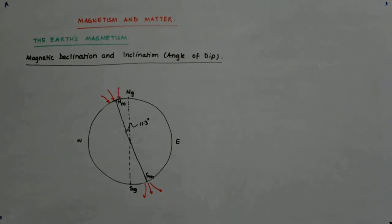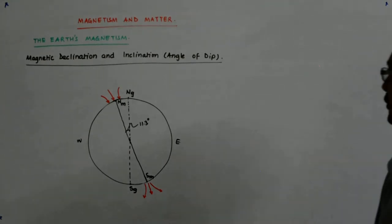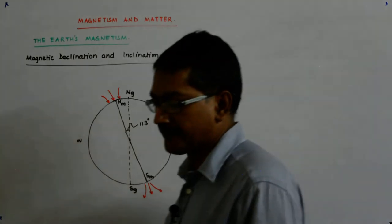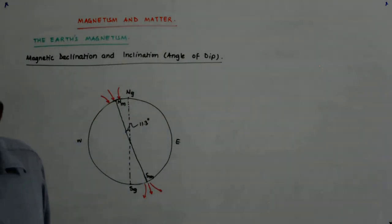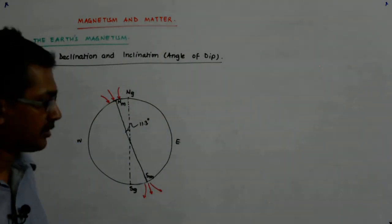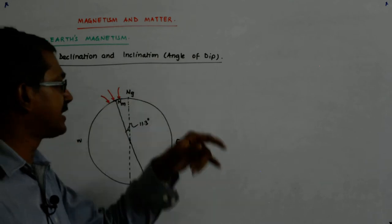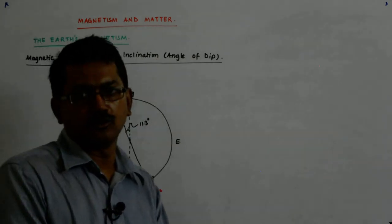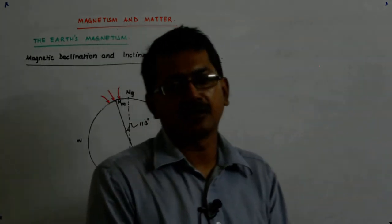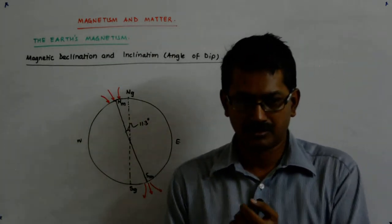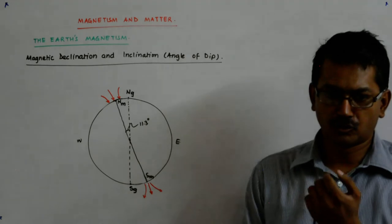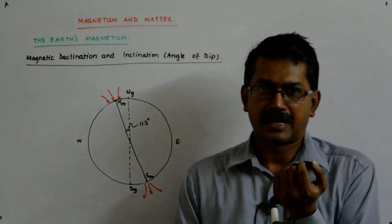We now come to a concept called magnetic declination and magnetic inclination. This magnetic inclination is also known as angle of dip.